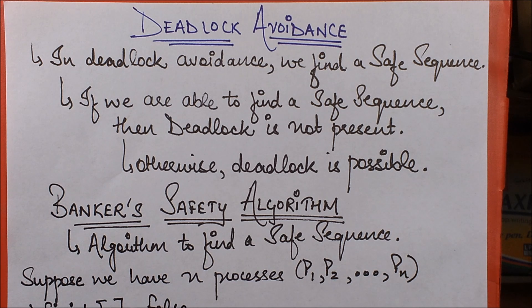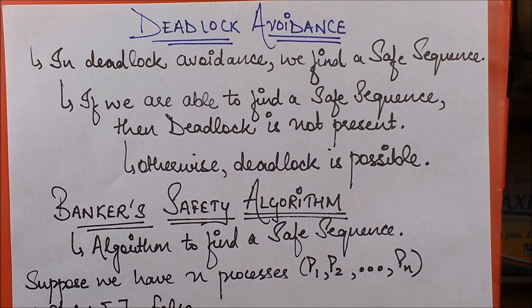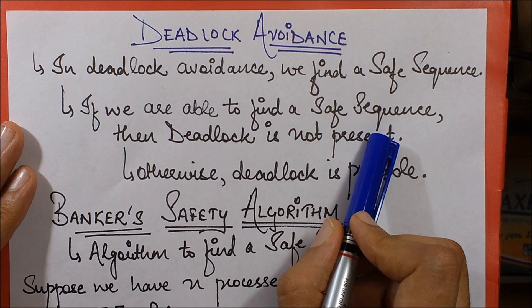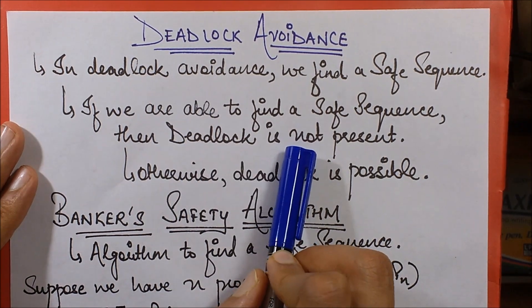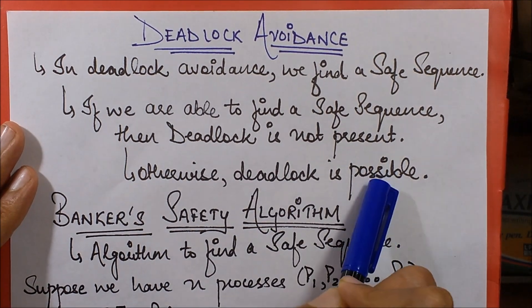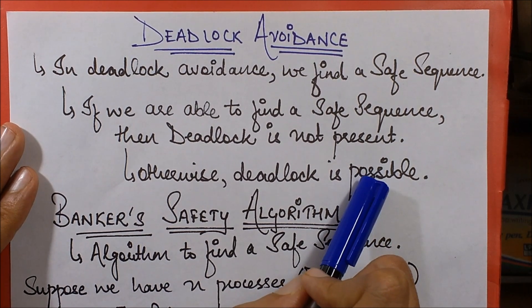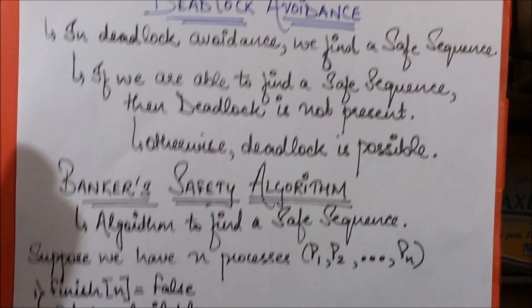In deadlock avoidance, we try to find a safe sequence — that is, a sequence of allocation of resources to a certain set of processes such that they never get stuck in a deadlock. If we are able to find a safe sequence, then we say deadlock is not present; otherwise, deadlock is possible. We are not sure it will always occur, but we can say it is possible.